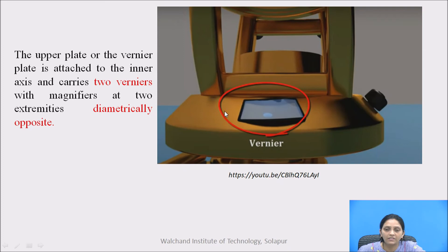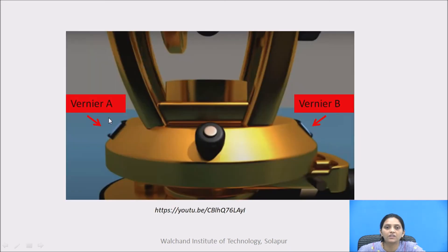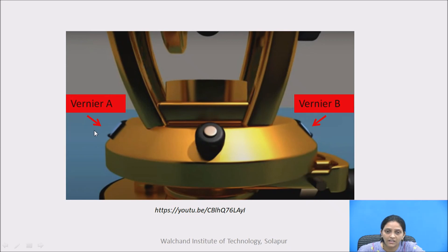The vernier plate is also called the upper plate. The upper plate is attached to the inner axis and carries two verniers with magnifiers at two extremities diametrically opposite. Vernier A and Vernier B are exactly opposite to each other, and the reading of Vernier A and the reading of Vernier B differ exactly by 180 degrees. If they do not differ by exactly 180 degrees, we calculate the difference and distribute the error equally between the Vernier A reading and the Vernier B reading.